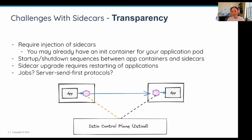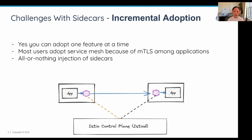Also, there are a lot of CVEs that come with Envoy proxy, so we tend to release CVE fixes and ask you to restart your application to pick up the newer version of Istio proxy. We don't support Kubernetes jobs, we don't support server-send-first protocols. These are the different challenges related to the sidecar lifecycle.